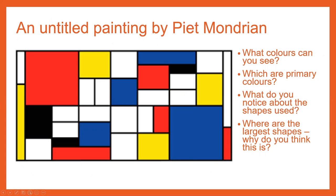This is a piece of art created by an artist called Pierre Mondrian. He has used primary colours to help us focus on different parts of his painting. He's used different sized shapes to help draw our eye into different elements of his painting.